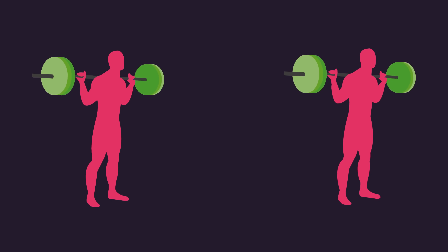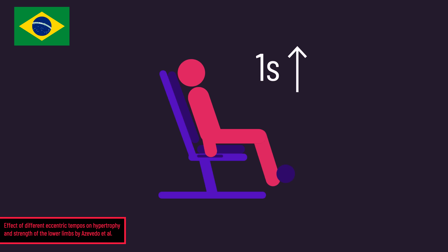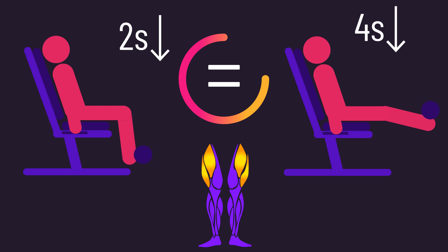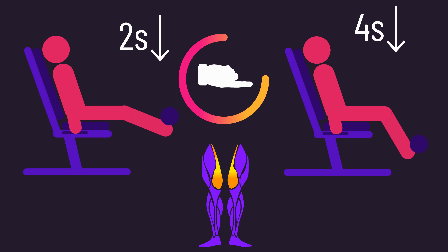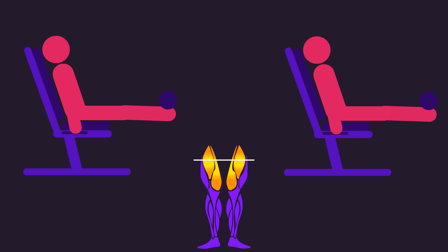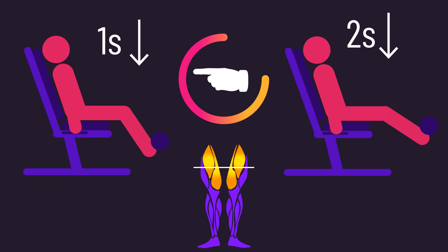A study out of Japan found that with a back squat using a 2-second lifting tempo, thigh size gains were similar between 2-second and 4-second lowering tempos. Another study out of Brazil found with leg extensions using a 1-second lifting tempo, rectus femoris and vastus lateralis gains were similar between 2-second and 4-second lowering tempos — but vastus medialis gains were greater for the 4-second lowering tempo. Conversely, a US study found gains at one region of the anterior thigh were actually greater for the faster 1-second lowering tempo.